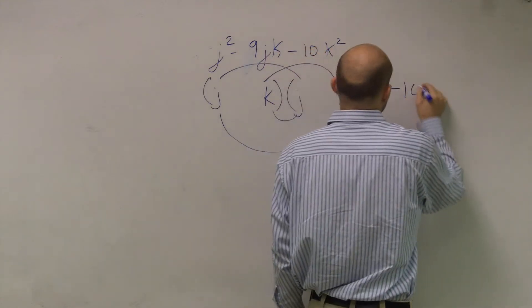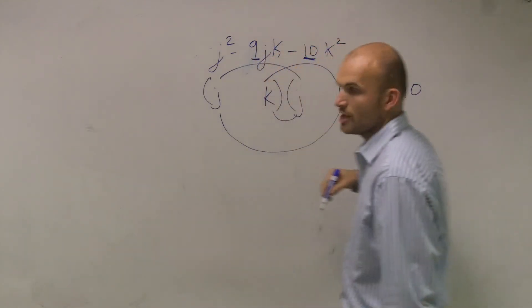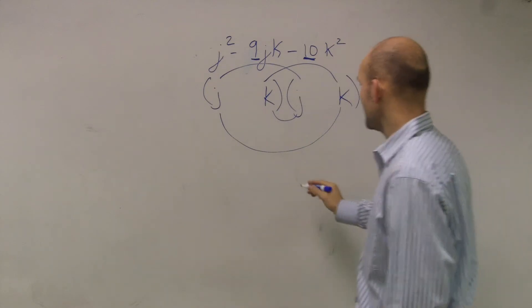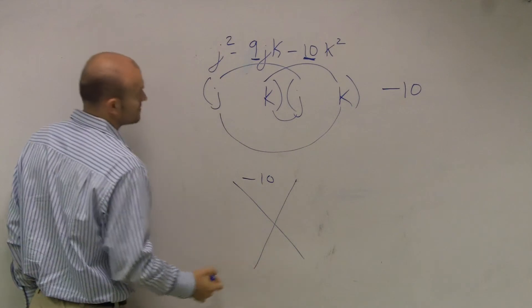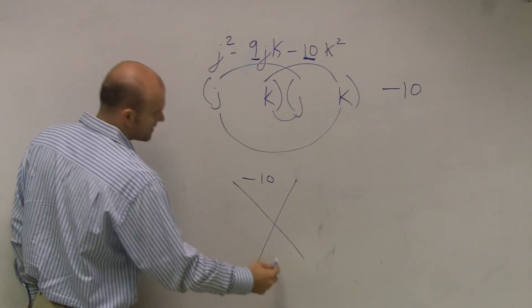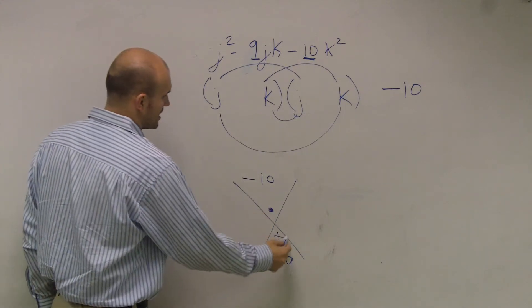So now what I need to do is let's just worry about the coefficients. Let's just worry about our actual numbers. So I have negative 10 as my C term, and then I have negative 9.